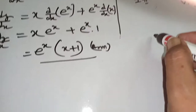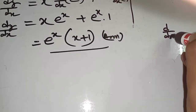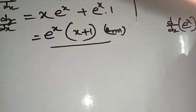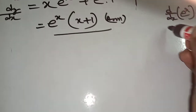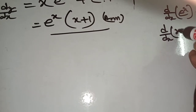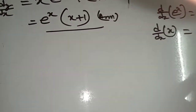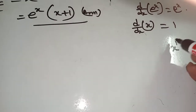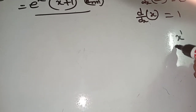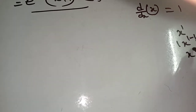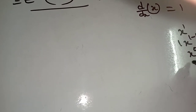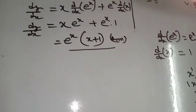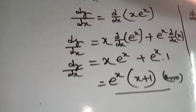You must remember: d/dx of e to the power x equals e to the power x, and d/dx of x equals 1. How? Because x has power 1, so power comes down first: 1 times x to the power (1 minus 1), which is x to the power 0, that means 1. You must remember this formula.